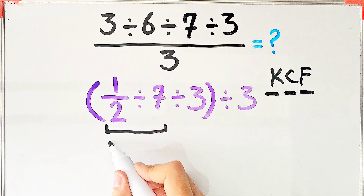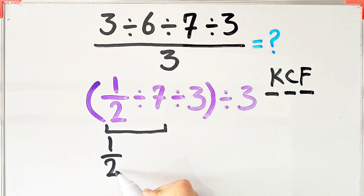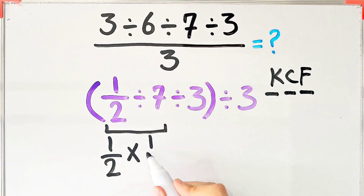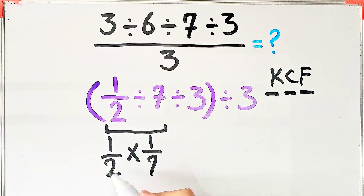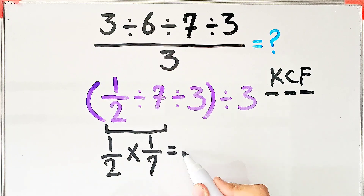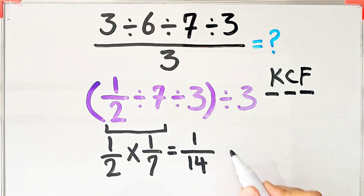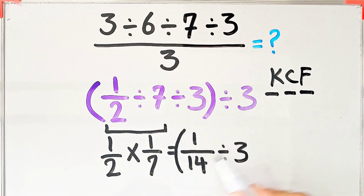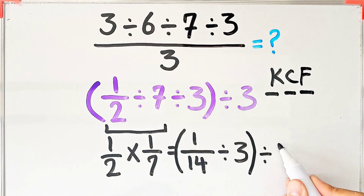We keep the first fraction, then we change the sign, then we flip the second number. Now we have 1 over 2 times 1 over 7, which equals 1 over 14. So we now have 1 over 14 divided by 3, then divided by 3.